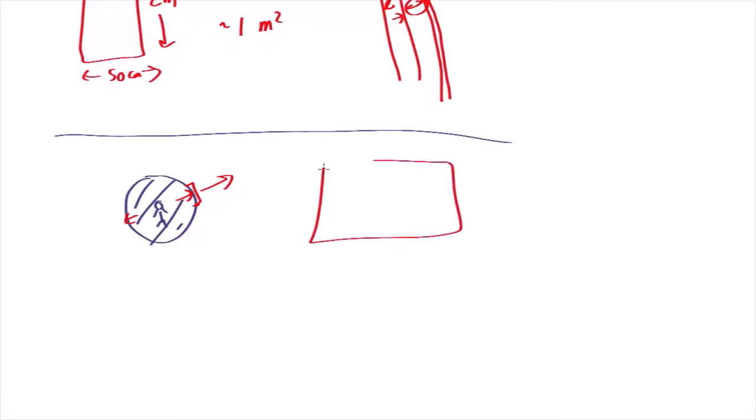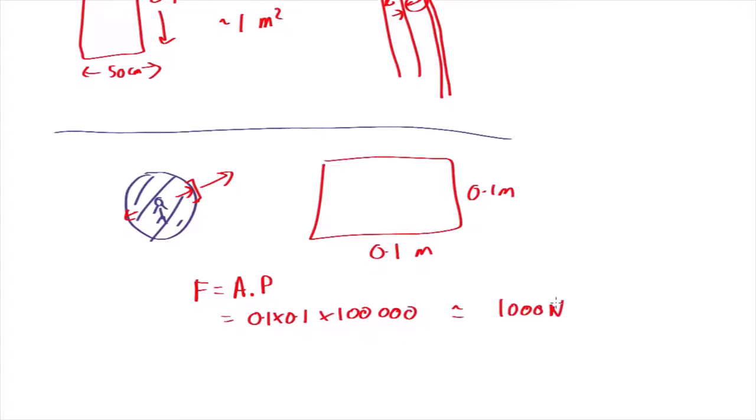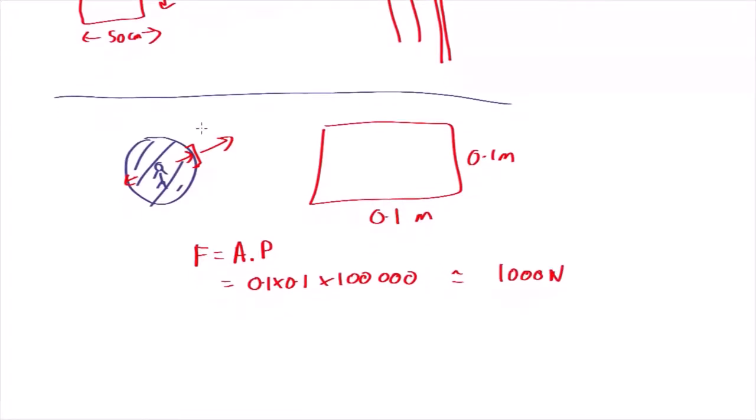So let's say you had a window that was 10 centimeters, 0.1 meter by 0.1 meter, and let's say the pressure inside your space station was the same as at the earth's surface, 100,000 pascals. There'd be an outward force on your window which is equal to the area. The force is equal to the area times the pressure. So that would be 0.1 times 0.1 is the area, times the pressure 100,000 pascals, roughly speaking, which comes out as about a thousand newtons. So that's how strong the bolts would have to be to hold your window in.